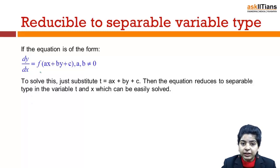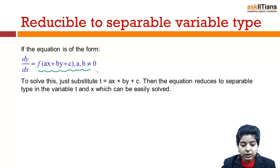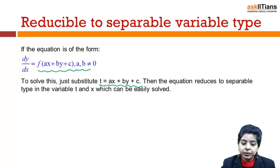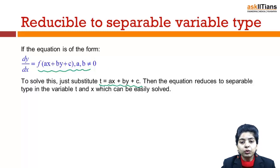If the equation is of the form dy/dx = f(ax + by + c), where a and b are nonzero, then in order to solve this, just substitute t = ax + by + c. The equation will get reduced to the separable variable type in the variables t and x, which can be easily solved. So if you have an equation of the form dy/dx = f(ax + by + c) where a and b are nonzero, simply use the substitution t = ax + by + c.